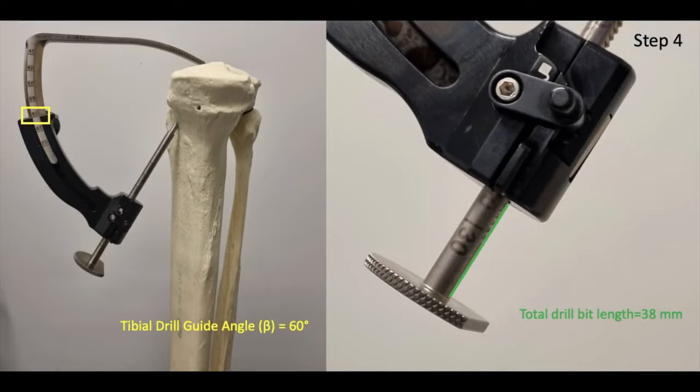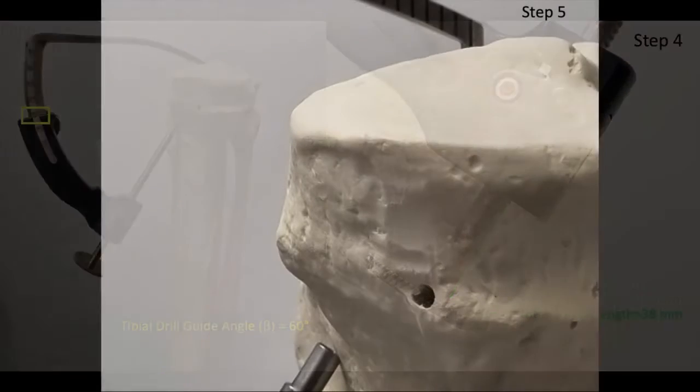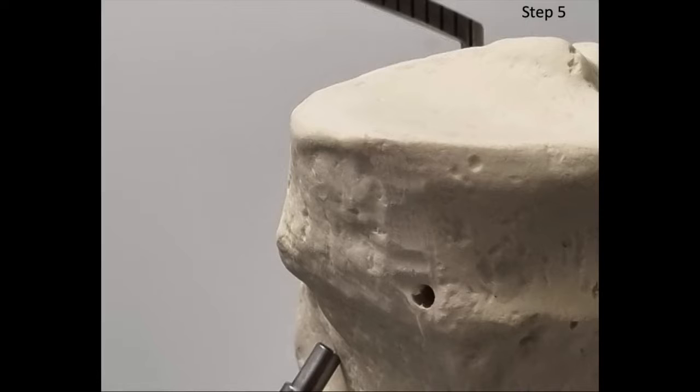Step 4 is to record the tibial drill guide angle and the total drill bit length off of the tibial drill guide. Now we're going to generate our trigonometric formula.